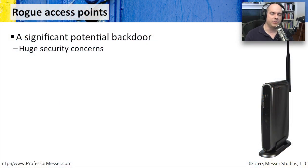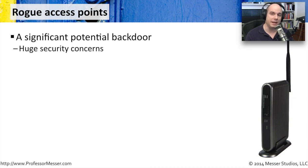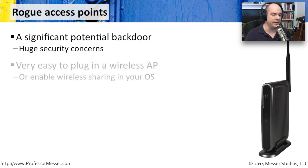A rogue access point is quite simply an access point that's been added to your network without your knowledge — you have no idea it's there. This is obviously something that can create a very significant backdoor. If you don't know an access point is there, then you certainly aren't managing it. You don't know if any type of security has been configured on it, and you have no idea who might be connecting to your network through this wireless connection. So there are really huge security concerns associated with a rogue access point.